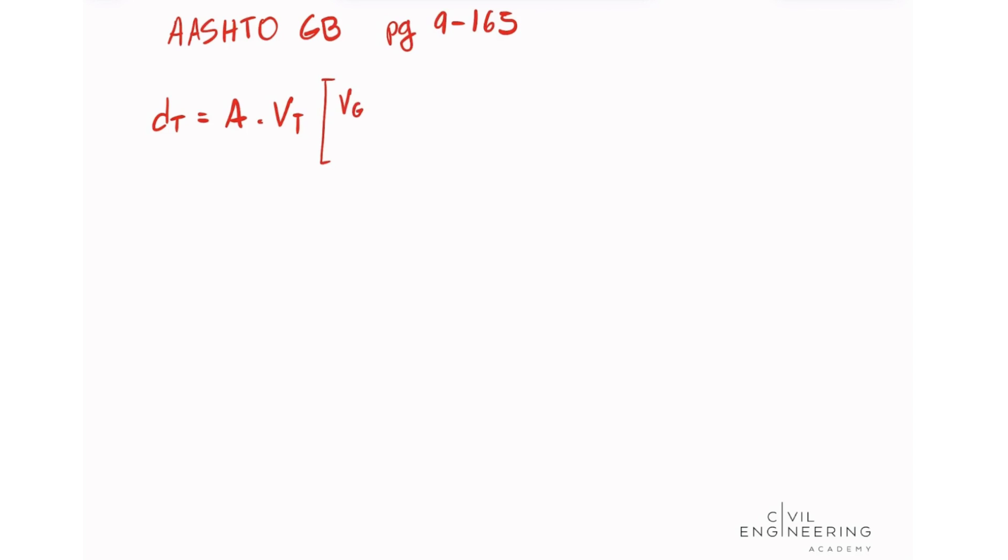So VG is the maximum speed of vehicle in first gear which is assumed to be 8.8 divided by A1 which is the acceleration of the vehicle in the first gear plus L.